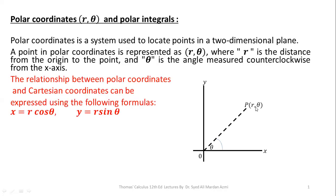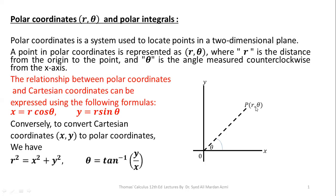We have the transformation equations x = r cos(theta) and y = r sin(theta) in order to convert Cartesian coordinates into polar coordinates. For the reverse process, we have r² = x² + y² and theta = tan⁻¹(y/x).